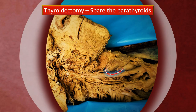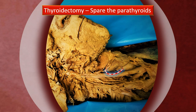Another interesting point: the parathyroid glands are located along the posterior border of the thyroid. Both parathyroids have a branch coming from the inferior thyroid artery or one of its branches. The surgeon invariably makes sure that during thyroidectomy, the parathyroid glands are spared, and for that, the corresponding blood supply should also be retained. This is the most important take-home point from this discussion.